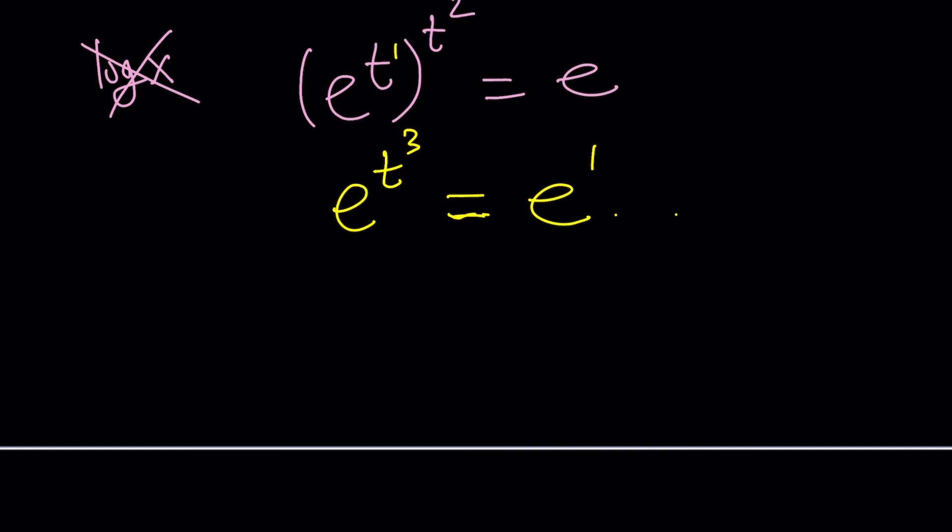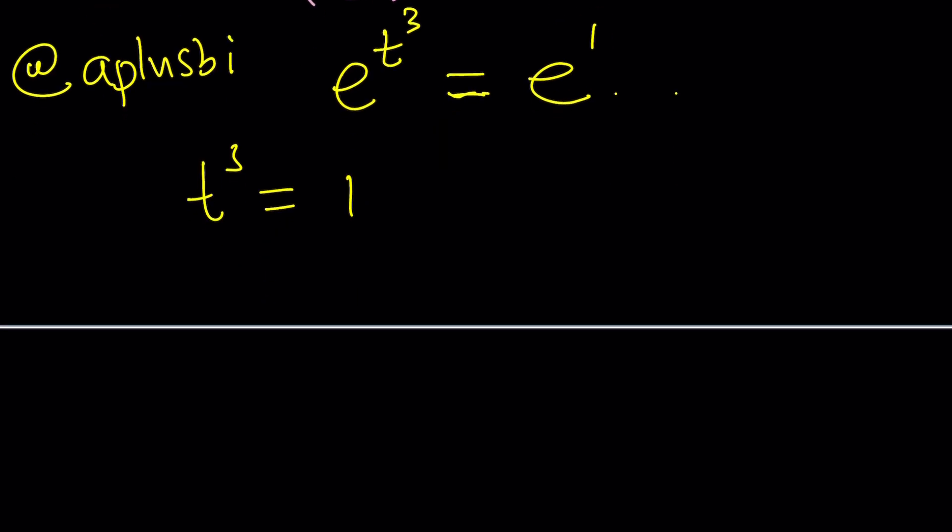We're going to need to pick our path, because t cubed equals 1 is what we're going to get from here, but 1 in the real world has 1 cube root. In the complex world, it has 3 roots. Wait a minute. This channel is not always about complex numbers, because we have a dedicated channel for that, which is called a plus pi. So go ahead and check it out, if you haven't done so already. But I'm going to stick to the real solution. If you wanted to complex solutions, you can go ahead and look at complex or cube roots of unity, which is 1. So I'm going to stick with t equals 1, which will make things easier.